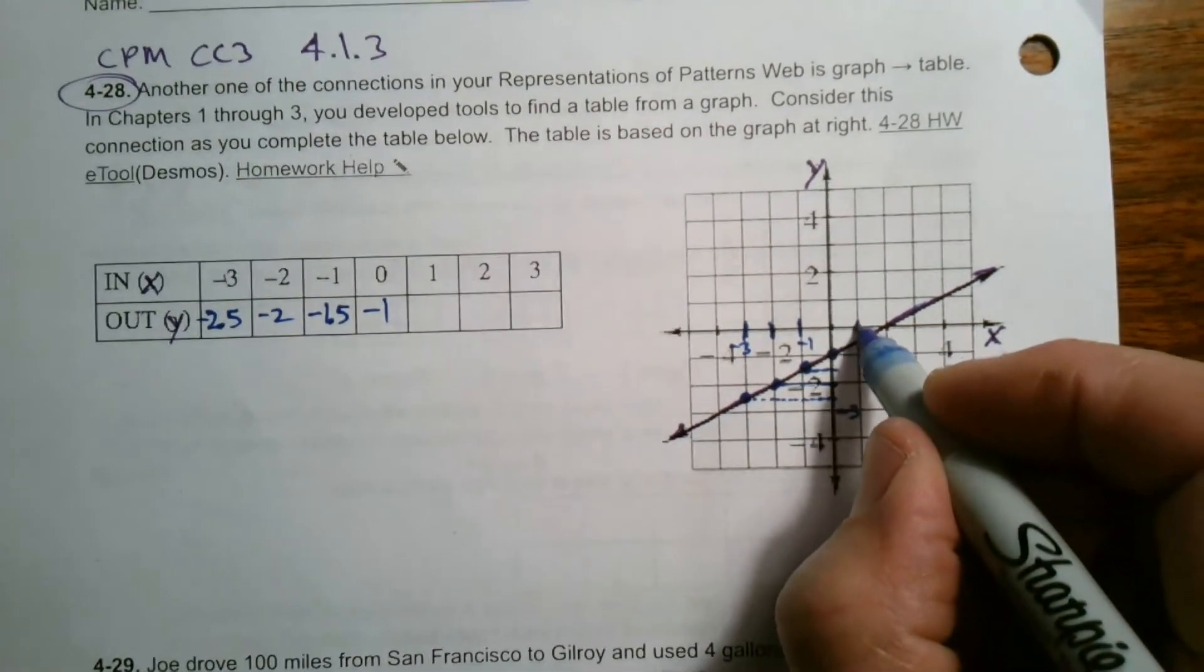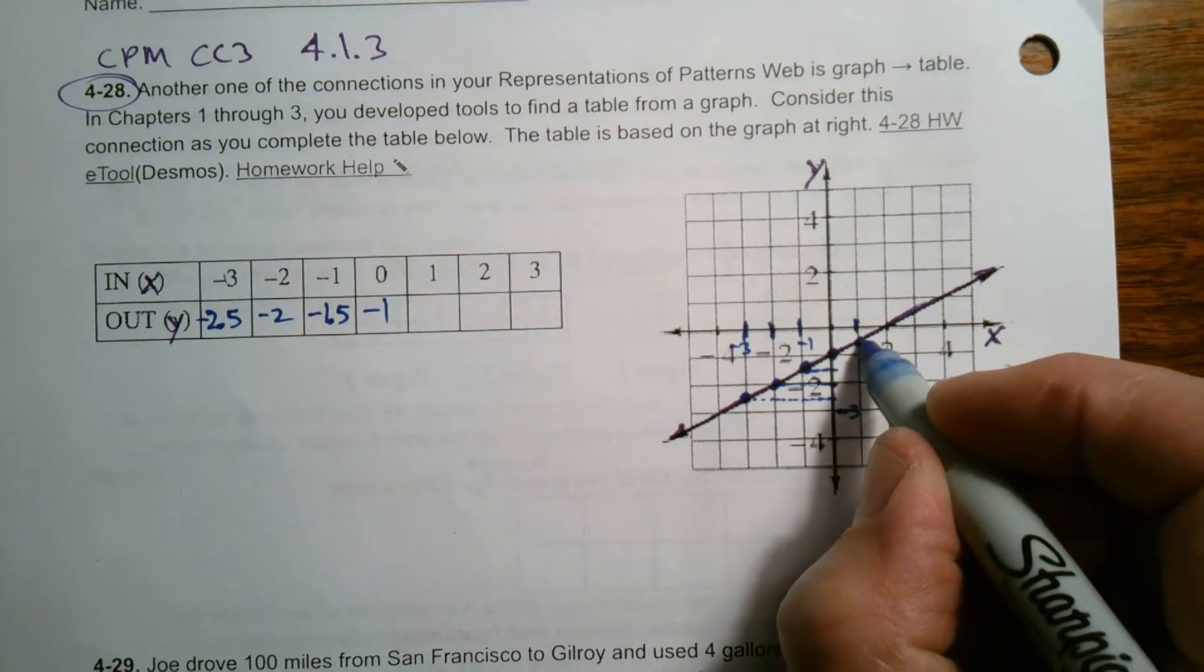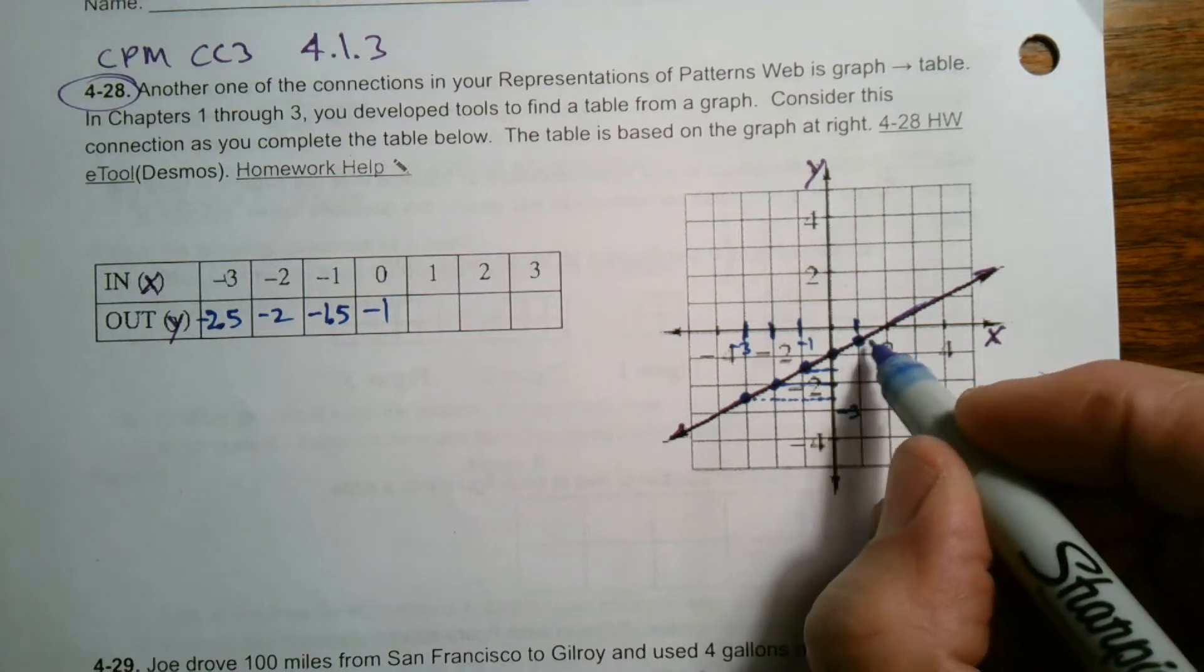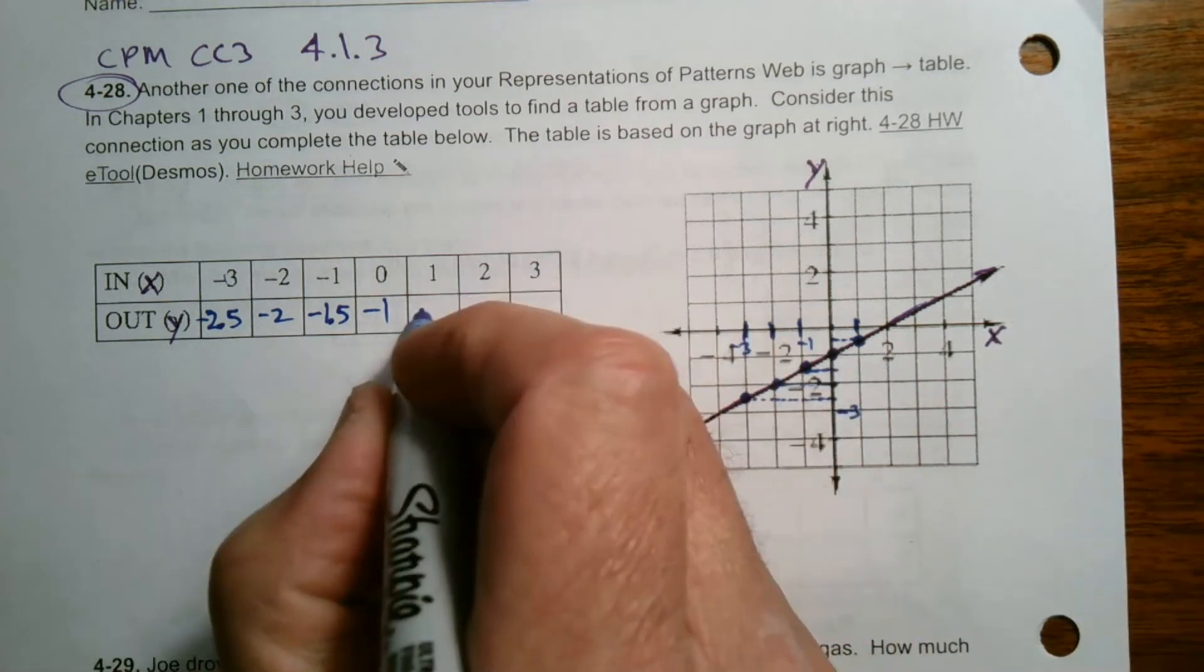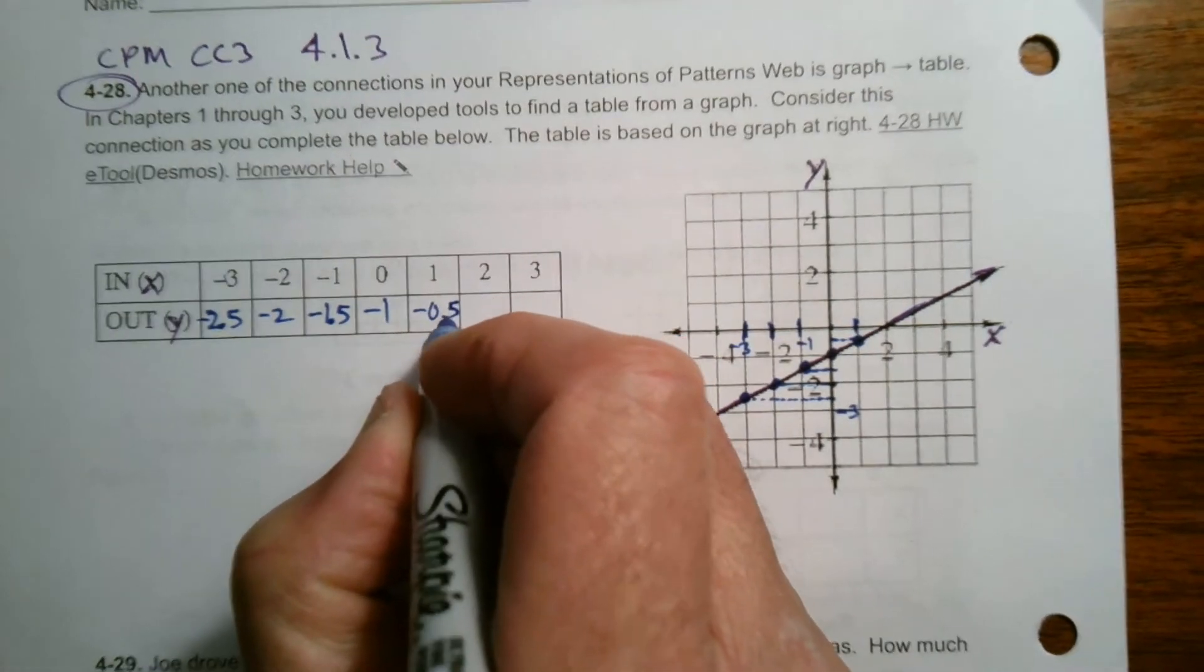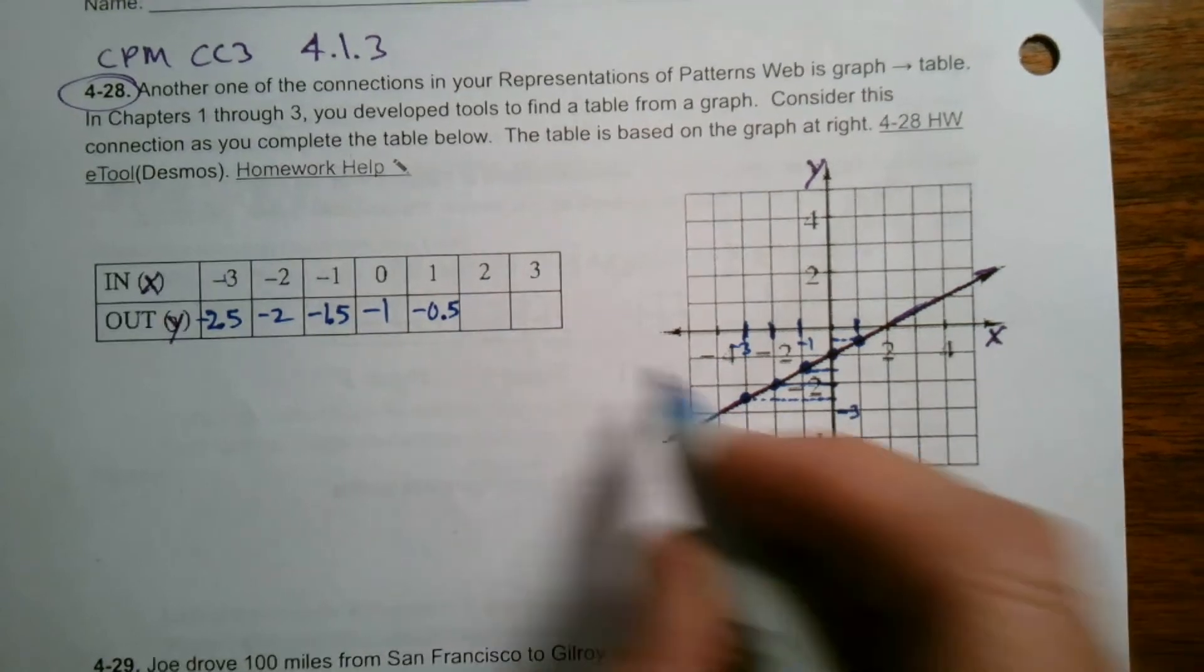And then at one, at X equals one, which would be right here, it looks like that point would be on the line there. Where is that? What value is that for the Y value? That would be negative 0.5 or negative one half.